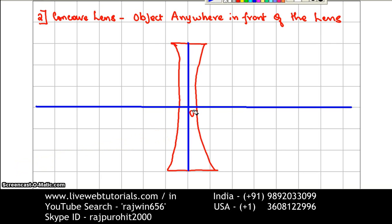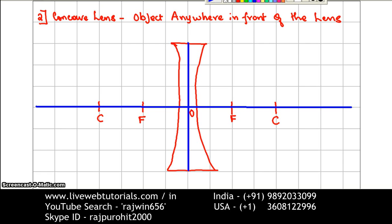From the optical center, on either side, mark two points at a distance of 3 cm each — these points are going to be our foci. Then again from the optical center, at a distance of 6 cm each on either side, mark the centers of curvature, which are going to be 2f.